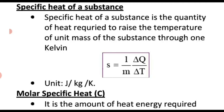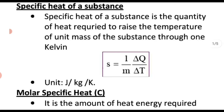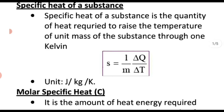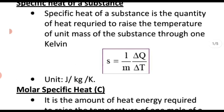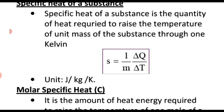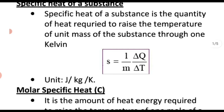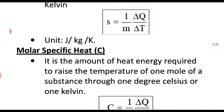Welcome to the next topic of chapter 12, thermodynamics: specific heat of a substance. We have already discussed specific heat capacity in the previous chapter. Specific heat of a substance is the quantity of heat required to raise the temperature of unit mass of the substance through 1 kelvin. Unit mass means 1 kilogram. So we have the specific heat capacity: s = ΔQ / (m·ΔT), where ΔQ is the amount of heat required to raise the temperature of m kilograms of substance through ΔT kelvin. The SI unit of specific heat capacity is joule per kelvin per kilogram.